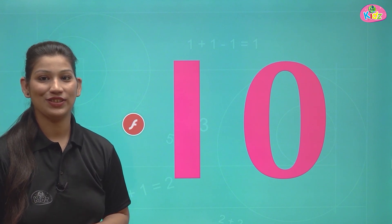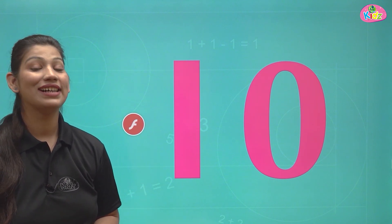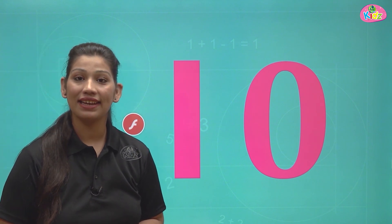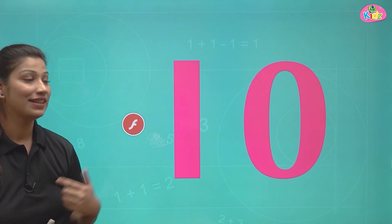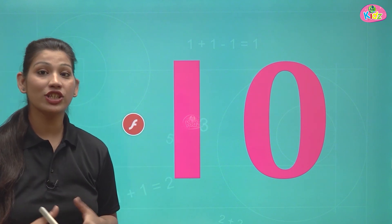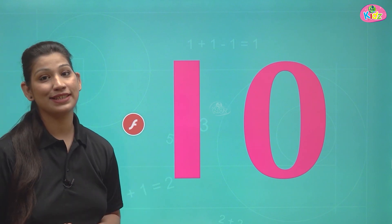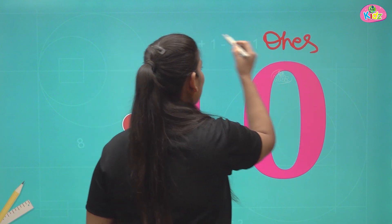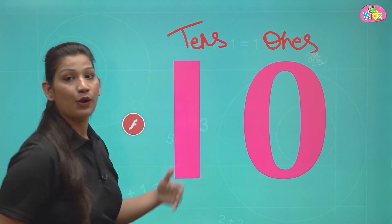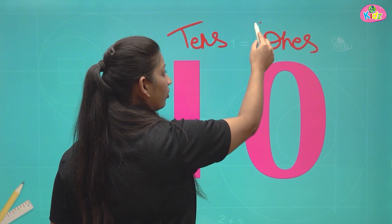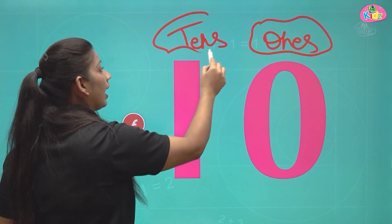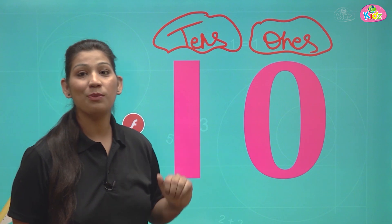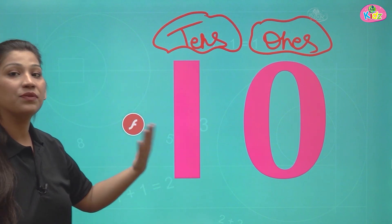Hello students, welcome to the session. Our topic for today is number 10. Number 10 is the first two-digit number. 10 is a two-digit number — one and zero makes up number 10. First we write one, and then we write zero.